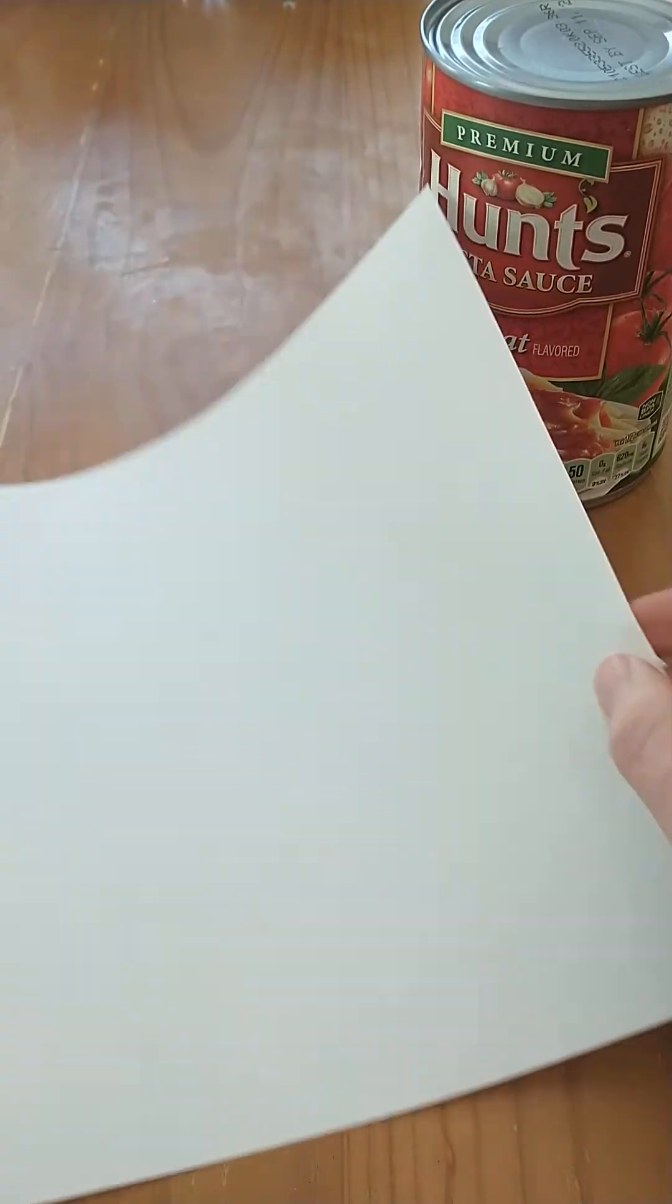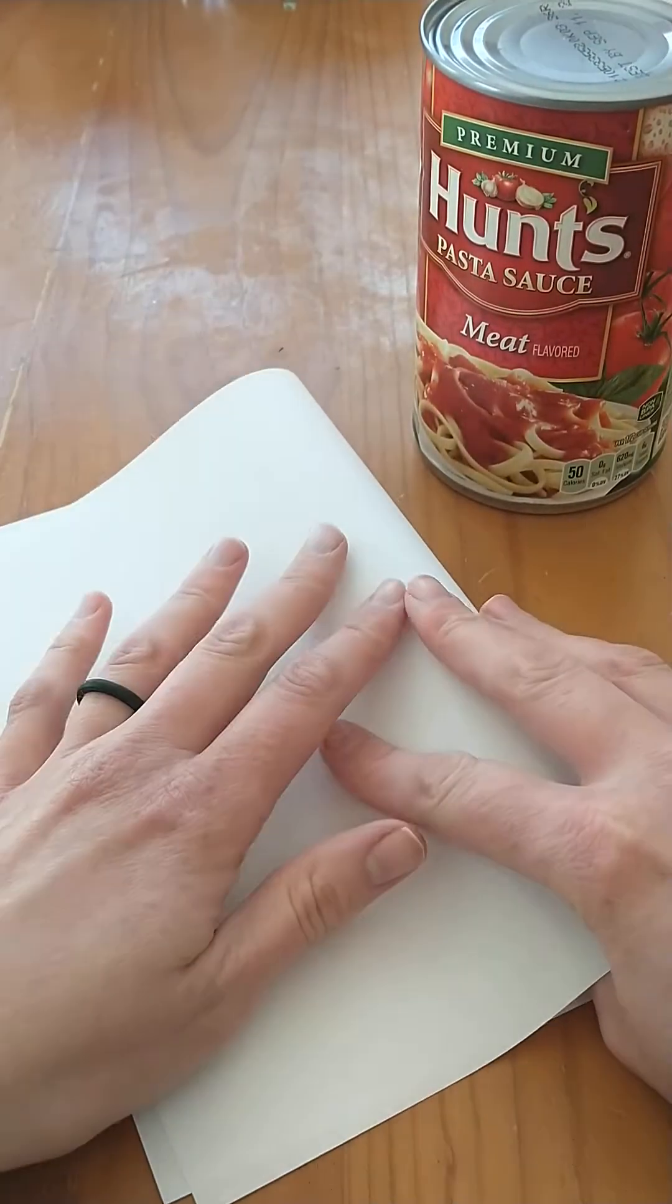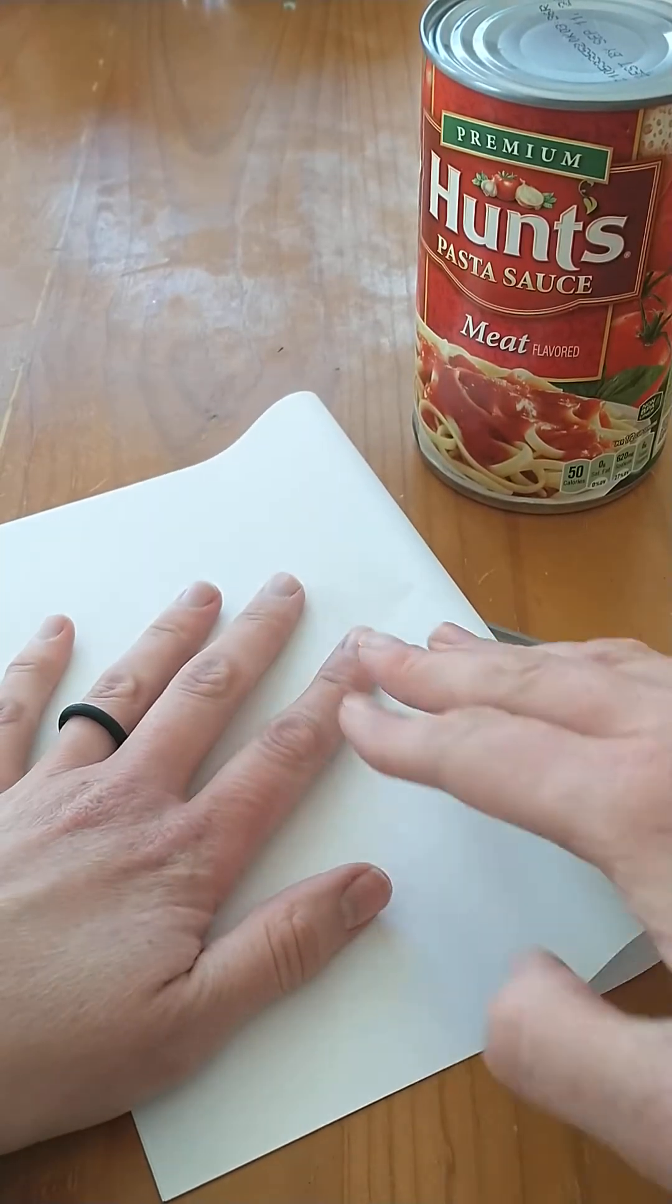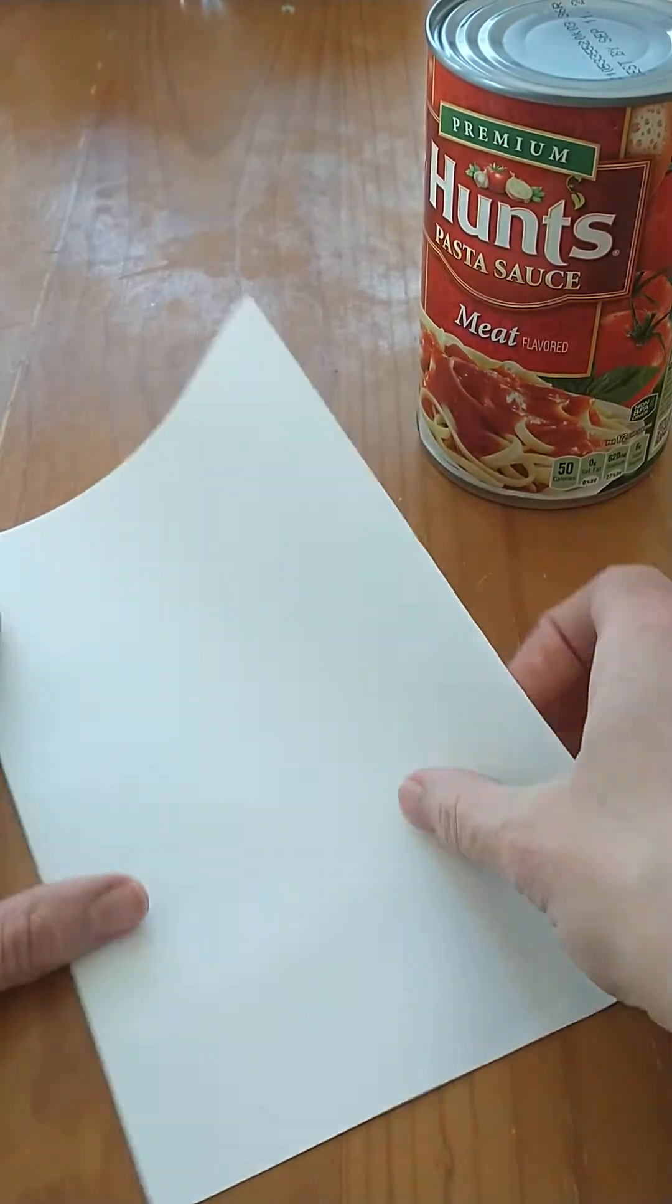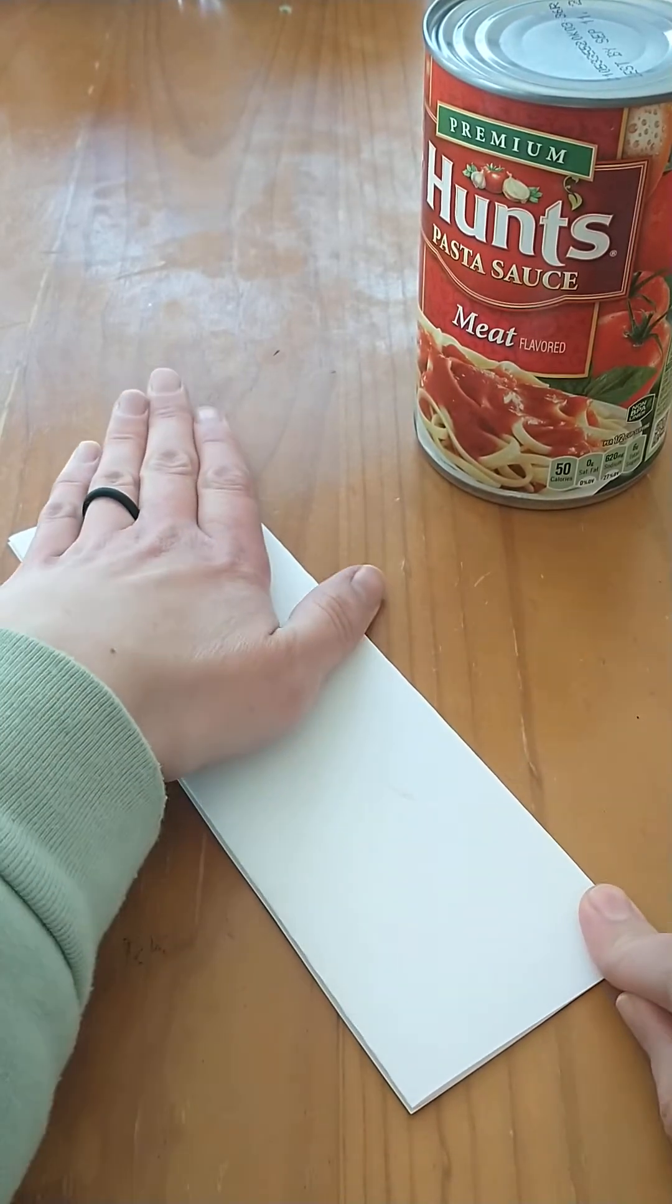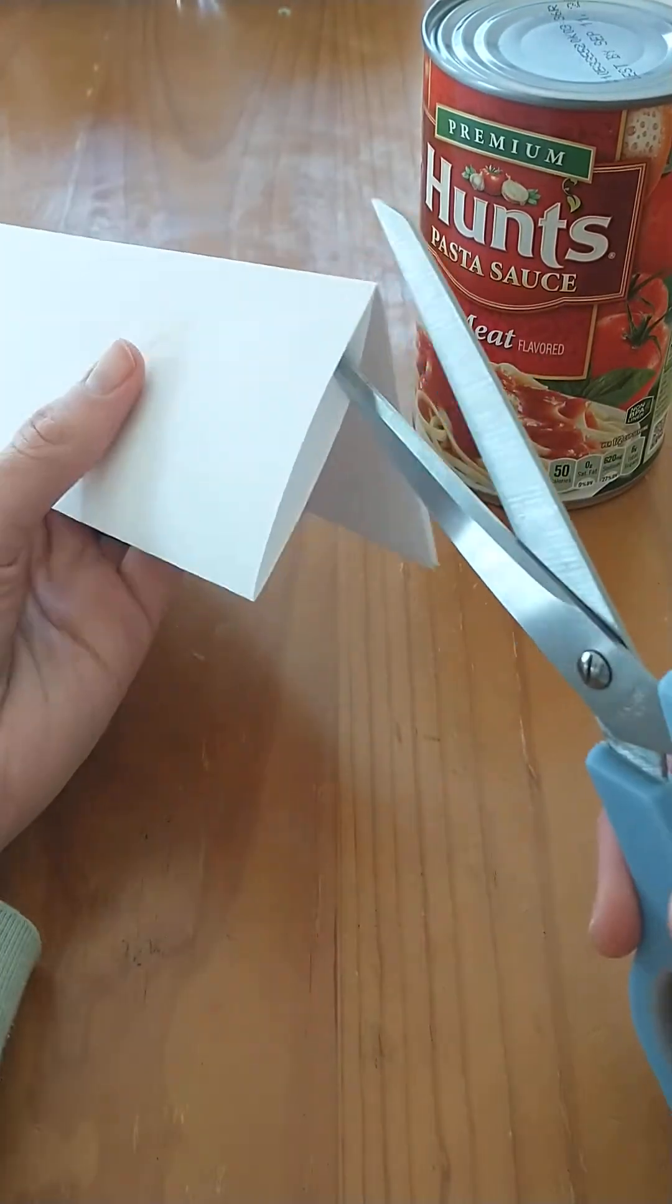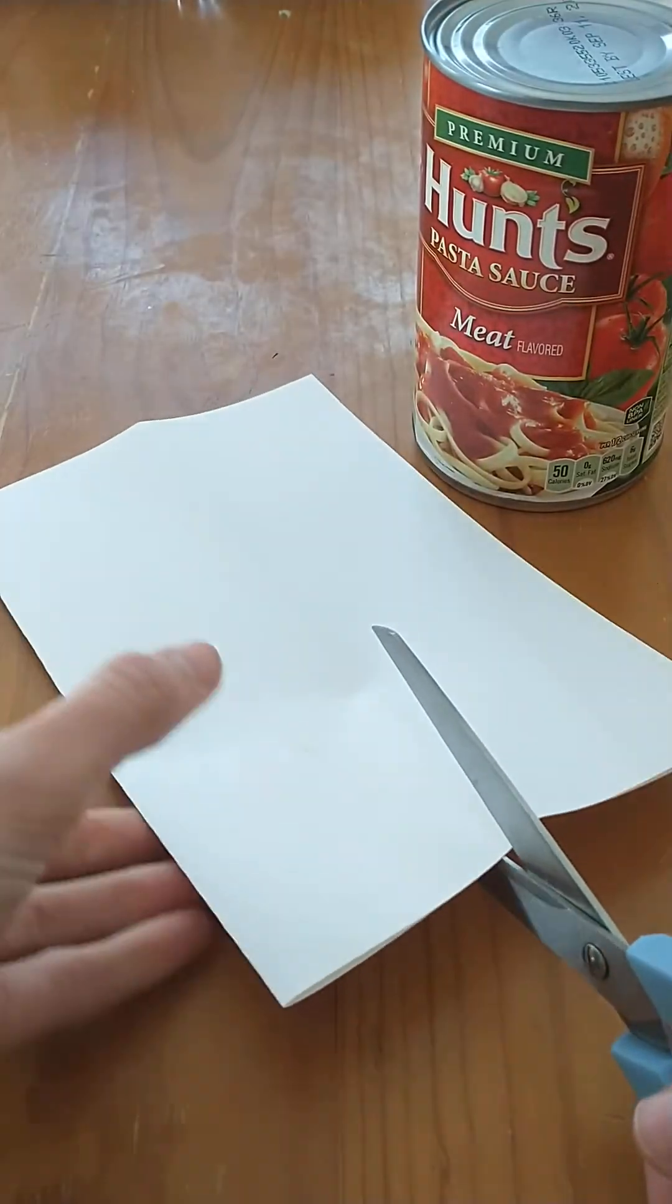All right now I'm going to show you guys how I do it. So we are going to fold the paper into four different sections. What I am doing here is I just want all of my pieces to have the same width. Now I'm going to cut these.